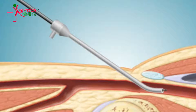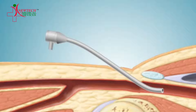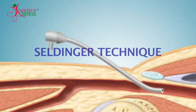After dilation, various kinds of catheters can be inserted into the blood vessel over the guide wire. This technique is internationally known as the Seldinger Technique.